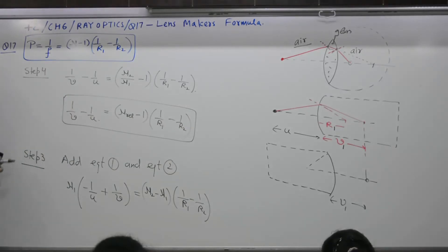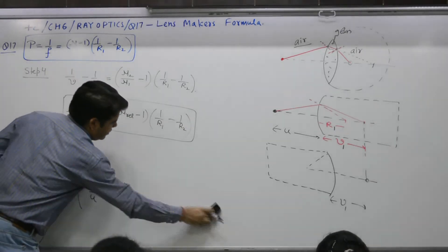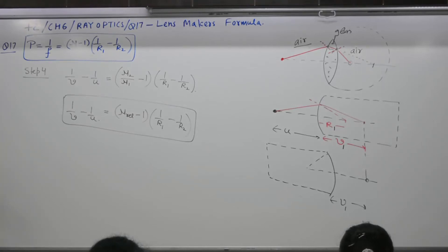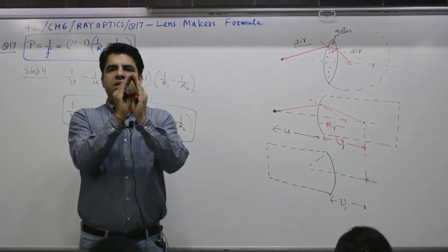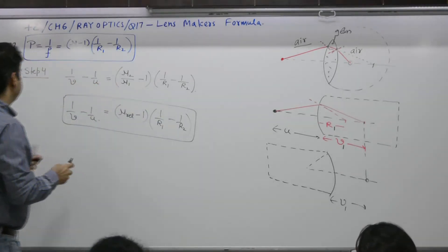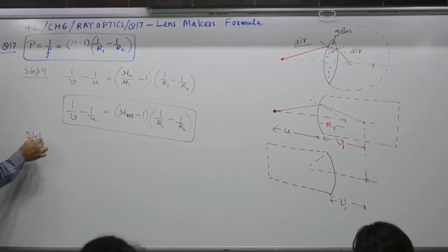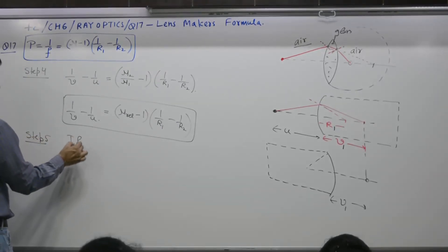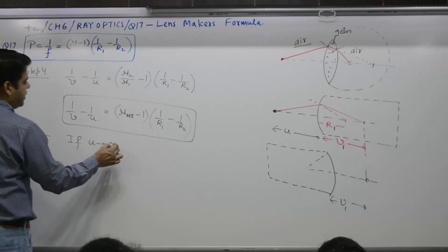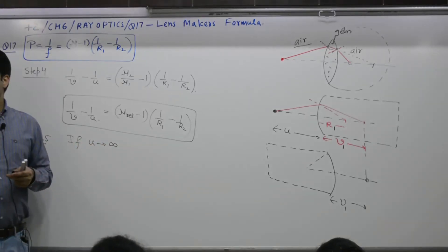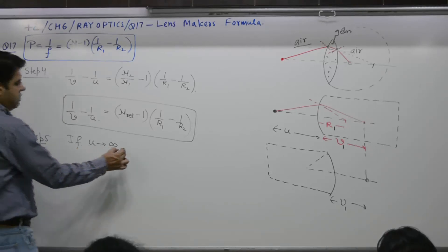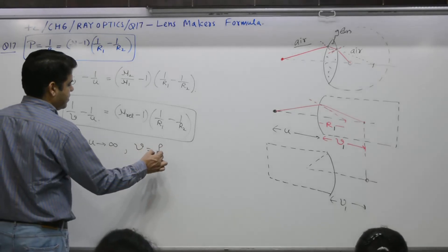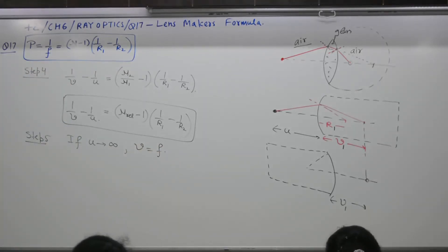But, you want to prove what? You want to prove something else? You want to prove this to be power or focal length? What is focal length? For any lens? If the rays are coming from infinity. Step 5. If U is infinity. If the rays are coming from infinity. Where is the image? At focus. As per definition. Put these values. Put these values in equation number 3.